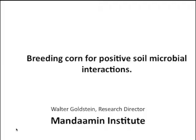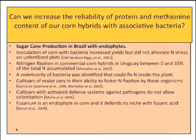So here we go: breeding corn for positive soil microbial interactions. I've given you two talks here, and they have to do with breeding corn that was higher in protein content and higher in essential amino acids. It didn't yield as well, but it produced more protein per acre, potentially.